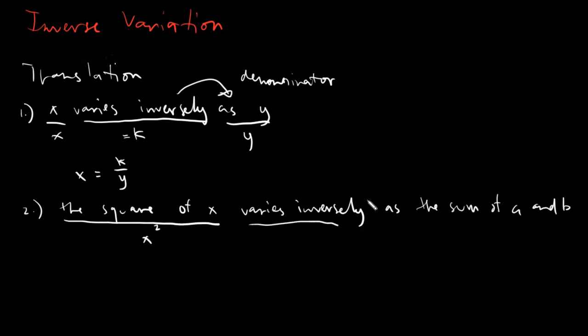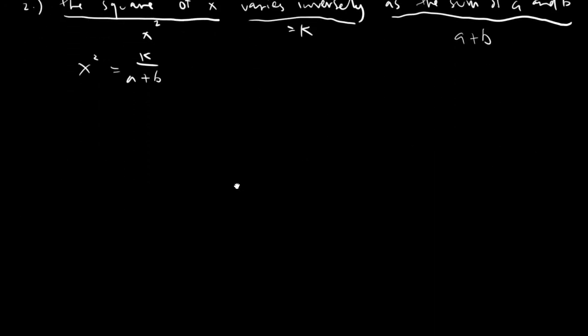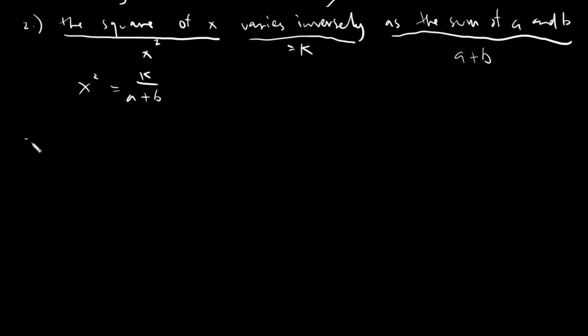And then immediately after the varies inversely, every given terms or equation or expression that you can come up with will be on the denominator. So this equals k, and this one would be as the sum of a and b. We write the sum of a and b as a plus b, giving us an equation of x squared equals k over a plus b. Very basic.